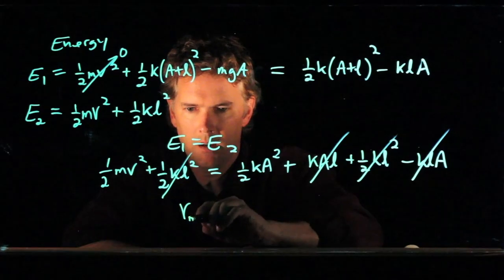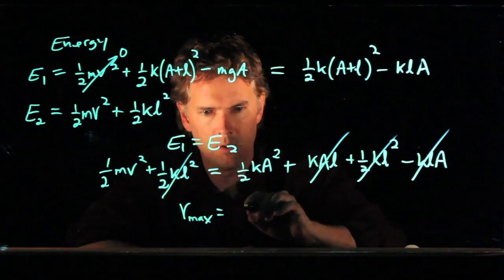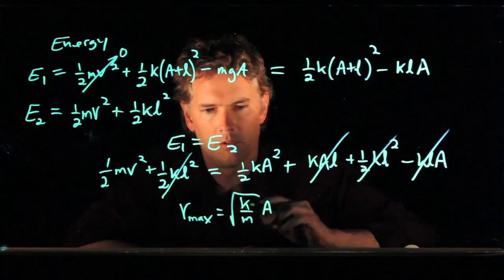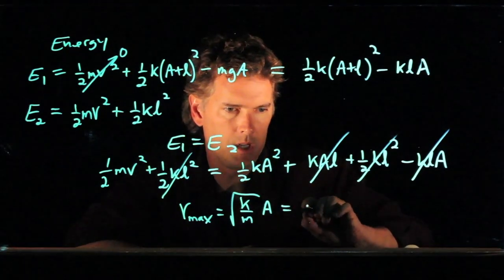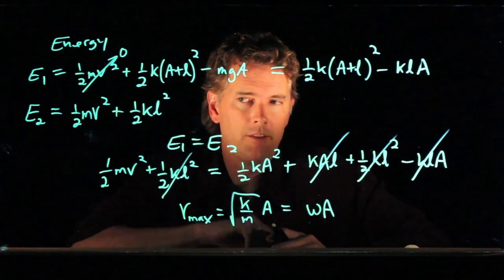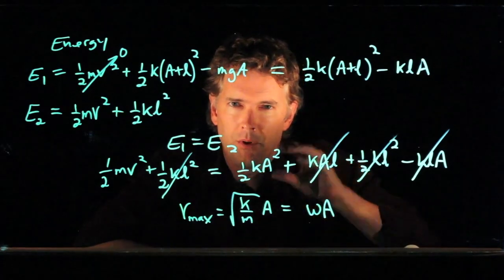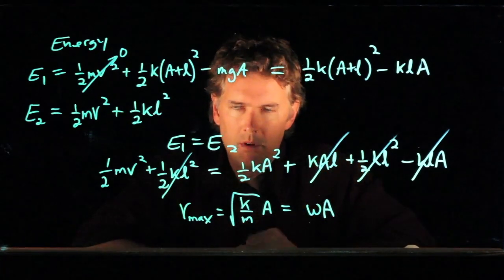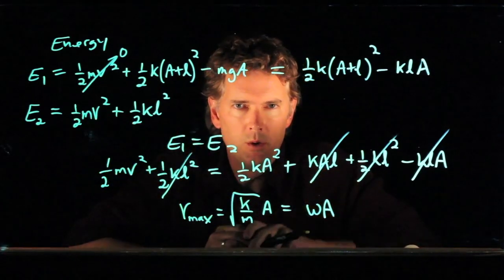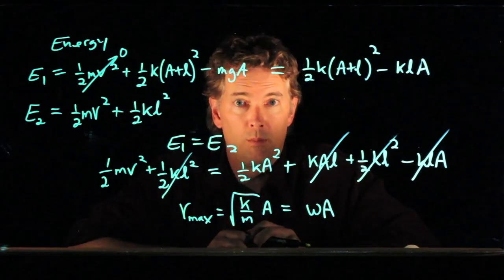And in fact, V is equal to what? Well, we multiply by 2. We divide by M. We get V_max equals square root of K over M times A, which is omega times A, which is exactly the same as the horizontal case. So a vertical spring behaves exactly the same as a horizontal spring as long as it's all relative to a new equilibrium position. And that's the whole point of this exercise.